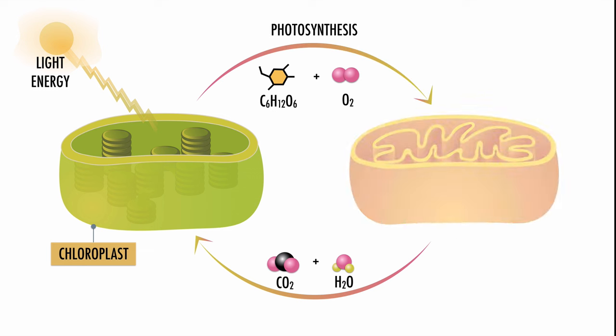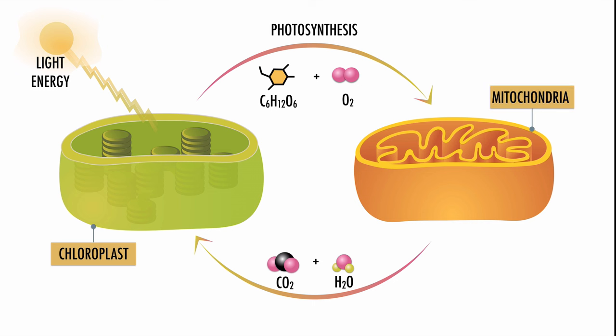The mitochondria take the products of photosynthesis, which are glucose and oxygen, and break the bonds of glucose to harvest lots of ATP in a process called aerobic respiration. The products of respiration are the reactants of photosynthesis: carbon dioxide and water. The goal of respiration is to make ATP.